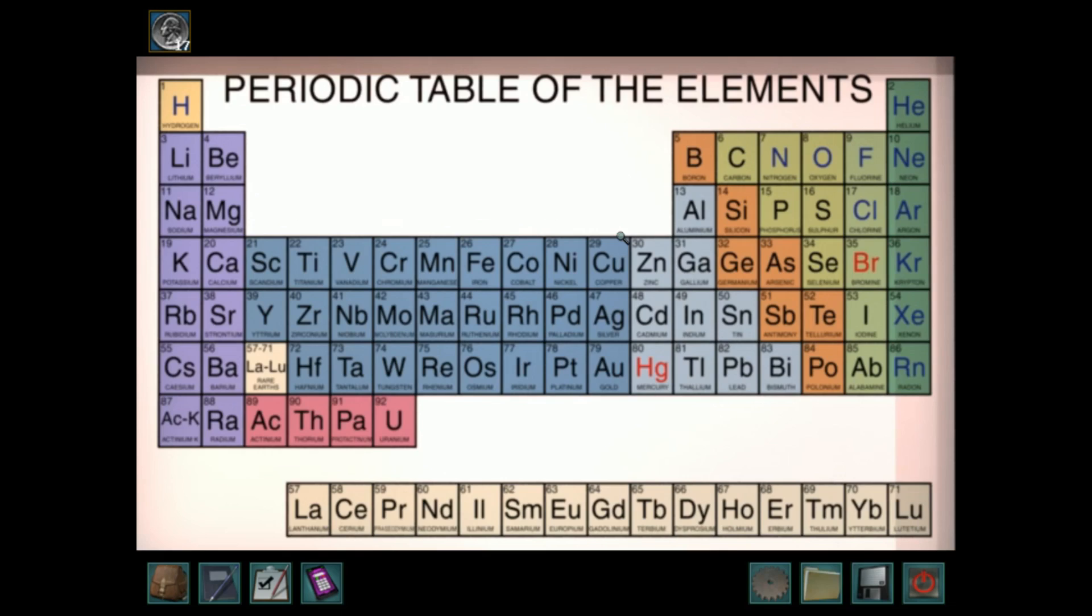Z-R, what was after Z-R? N-B, I don't have N-B. M-O, nope. M-A, nope. R-U, tired of this? Yes, yes I am. R-H, nope. P-D, do I have P-D? No I don't. I'm just desperate at this point. A-G, don't I have A-G? Yes I do, I do. It's 11.